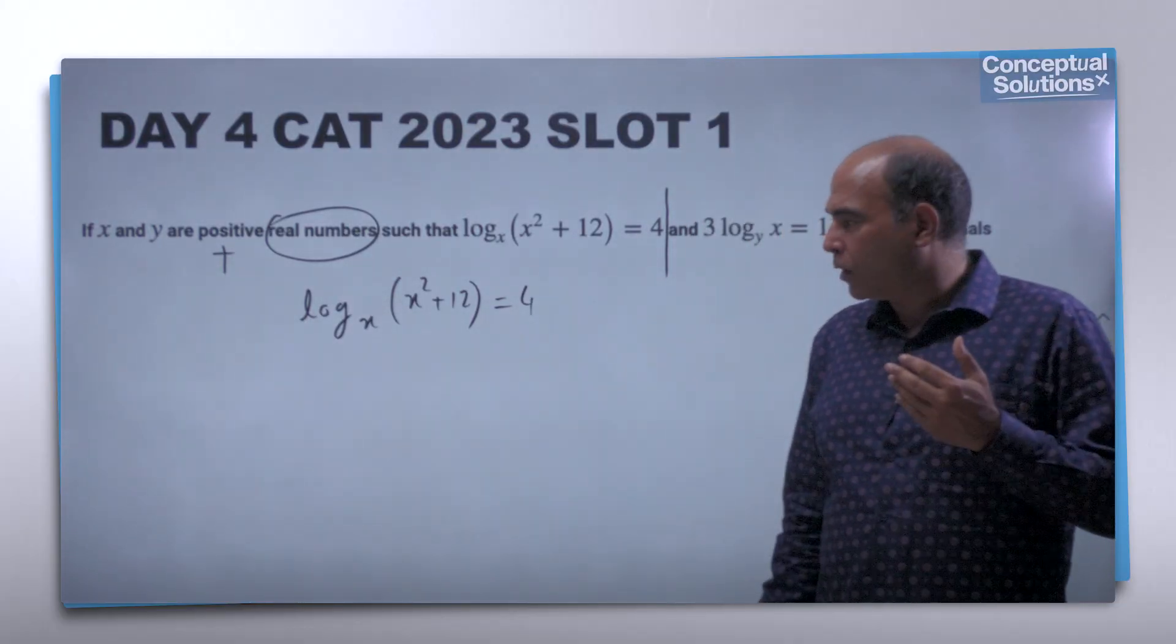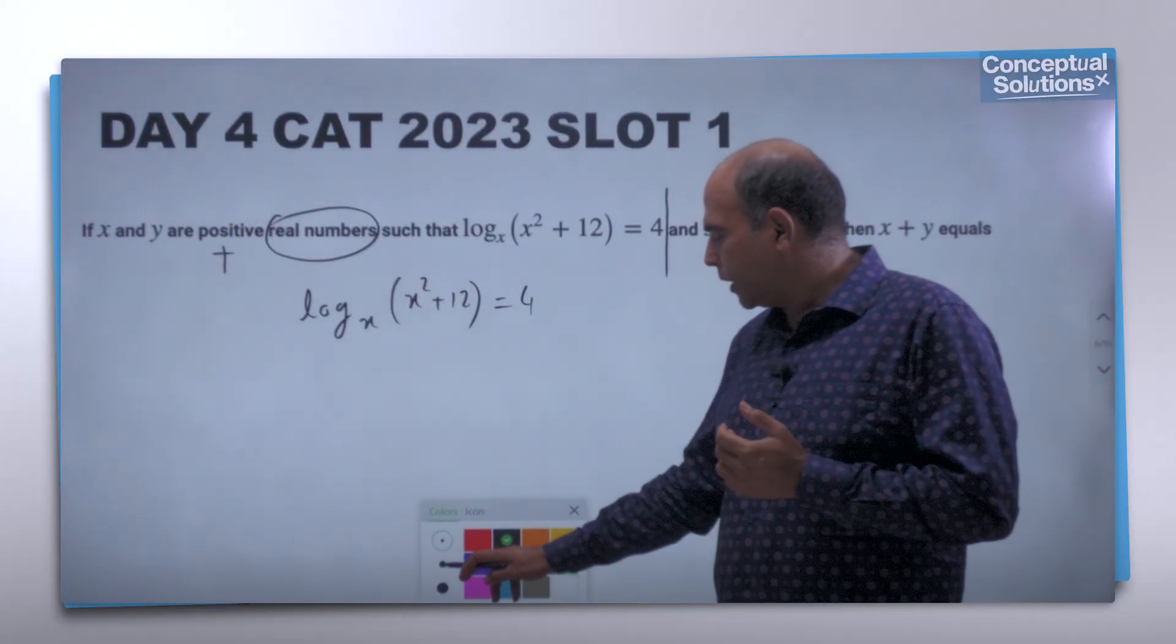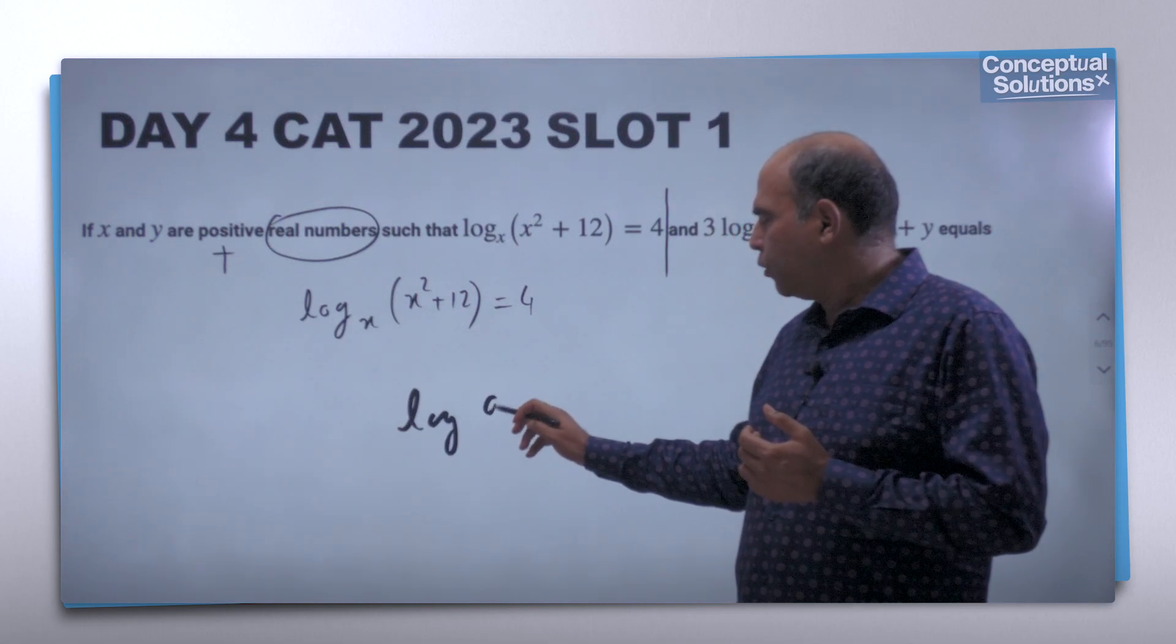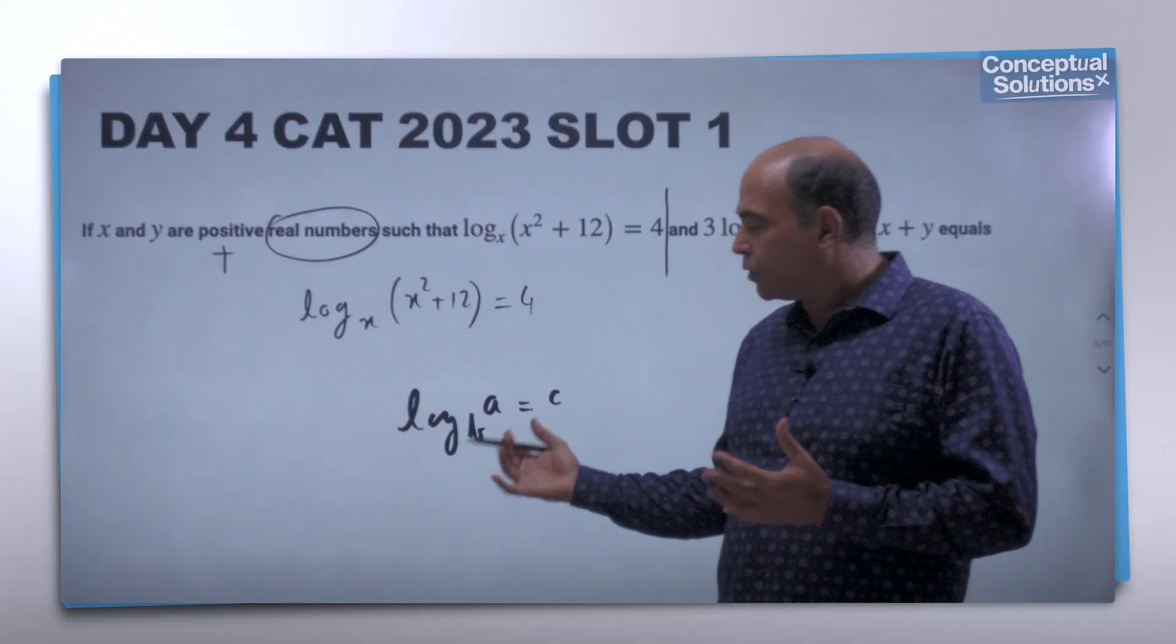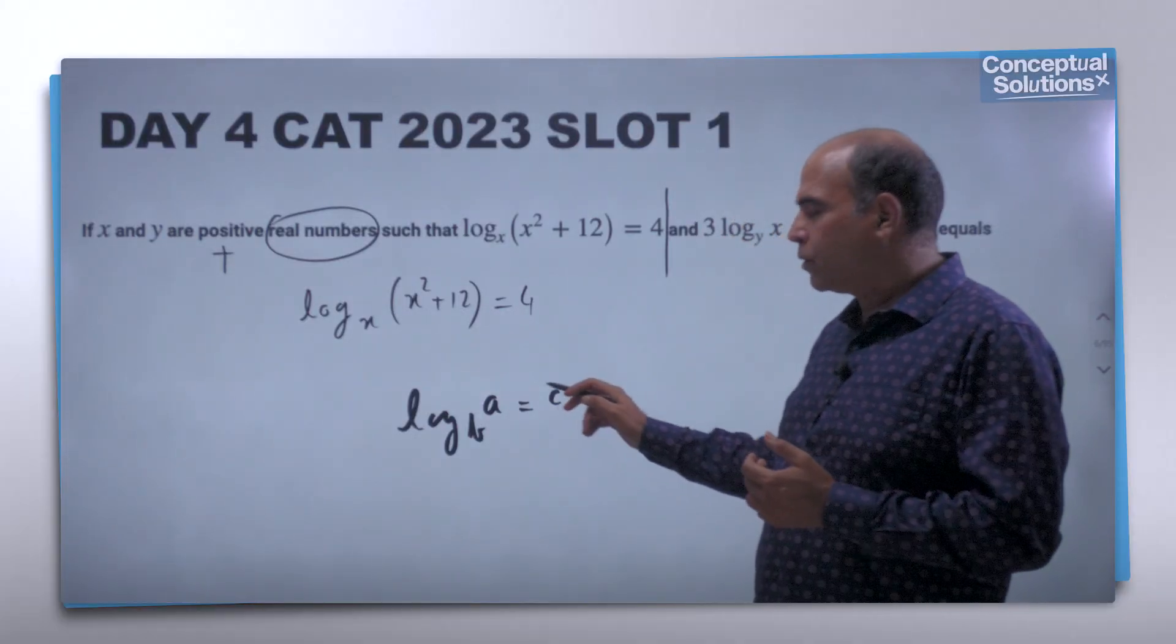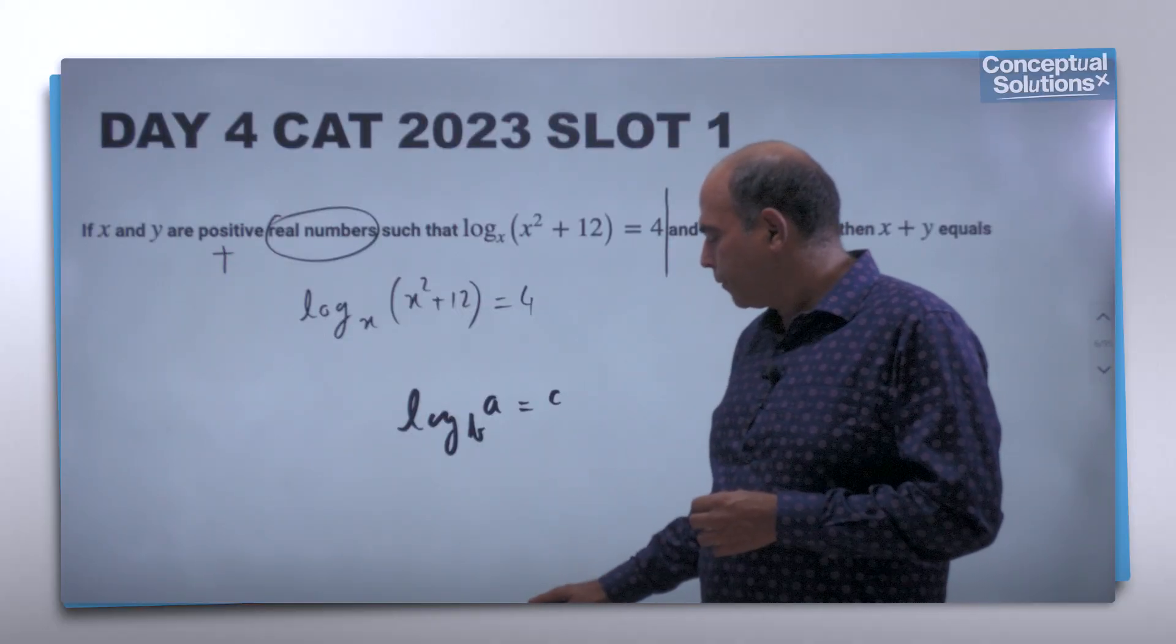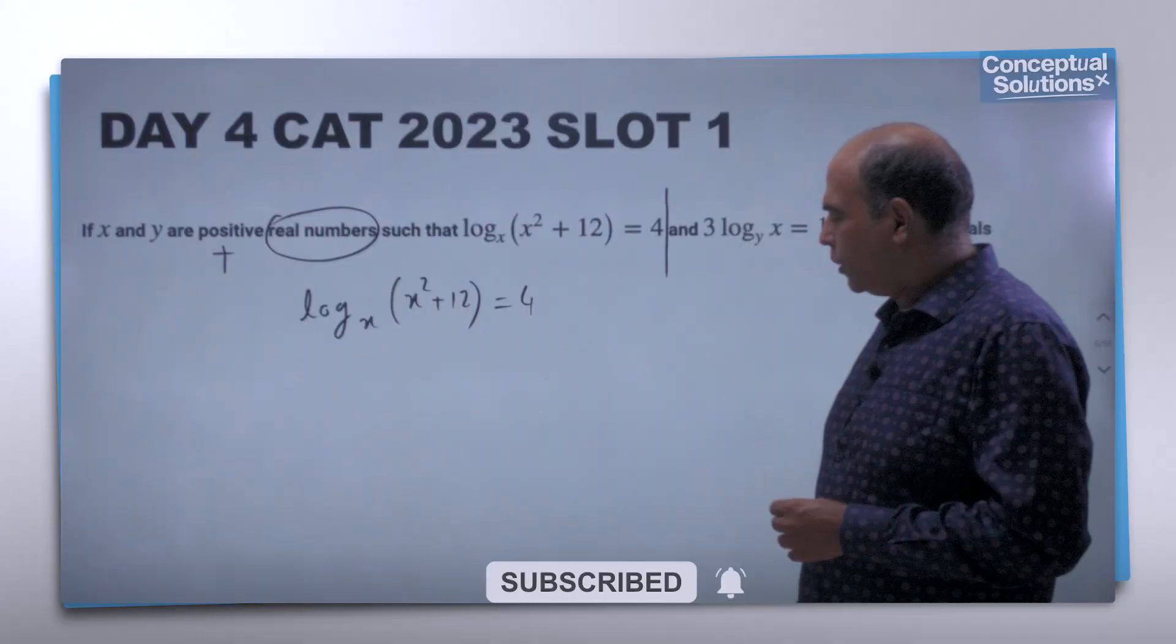The first way to think about it is using the definition of logs. The definition is basically that if log_b(a) = c, then b^c = a. So if you use the definition of logs in this question, what you will get is x^4 = x² + 12.